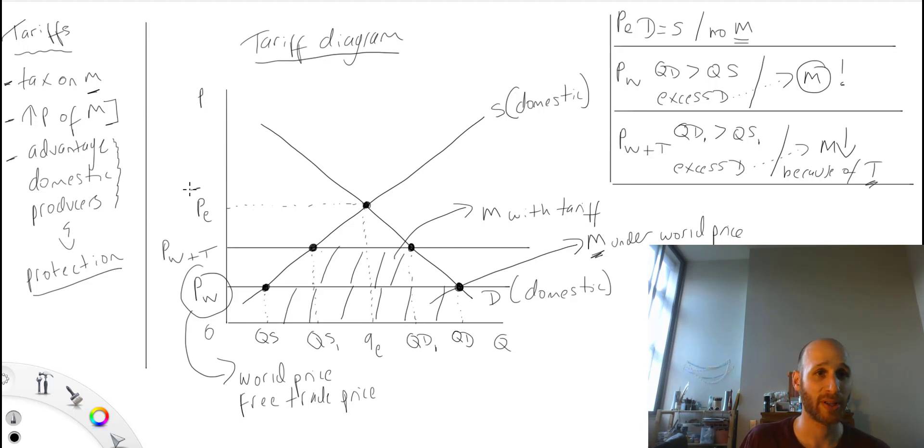Our equilibrium price one, to our world price two, to our tariff price three. And that is the basics on what a tariff is and how to draw a tariff.